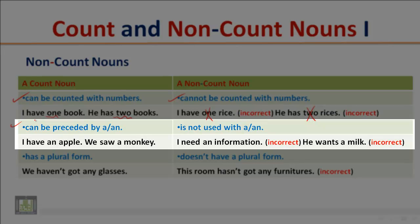A count noun can be preceded by 'a' or 'an.' For example: 'I have an apple,' 'we saw a monkey' — 'apple' is a count noun, it can be preceded by 'an.' An uncount noun is not used with 'a' or 'an,' so it is wrong to say 'I need an information' or 'he wants a milk,' because the word 'information' is an uncount noun.